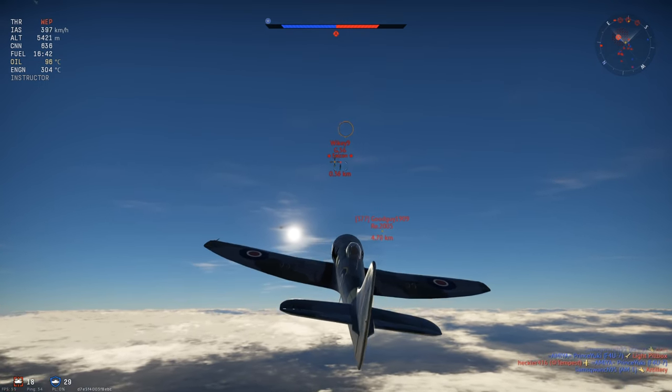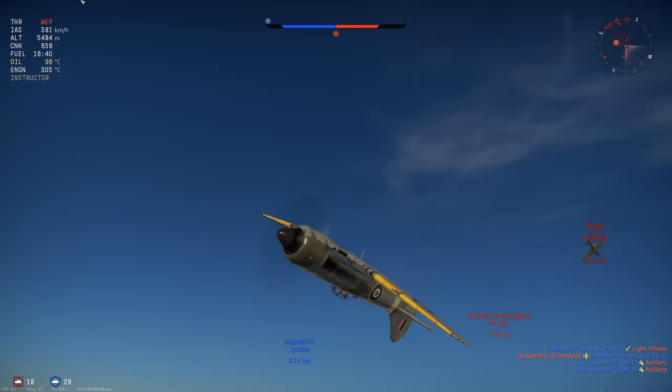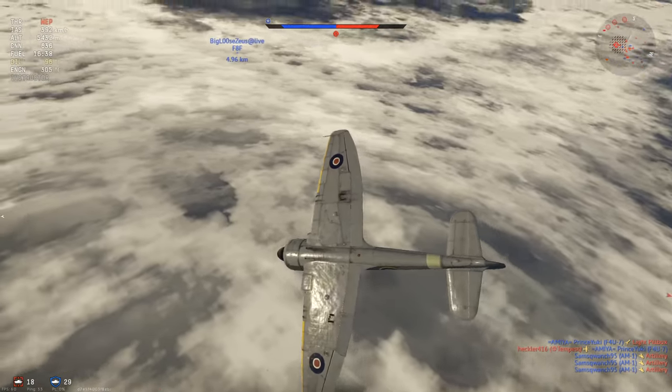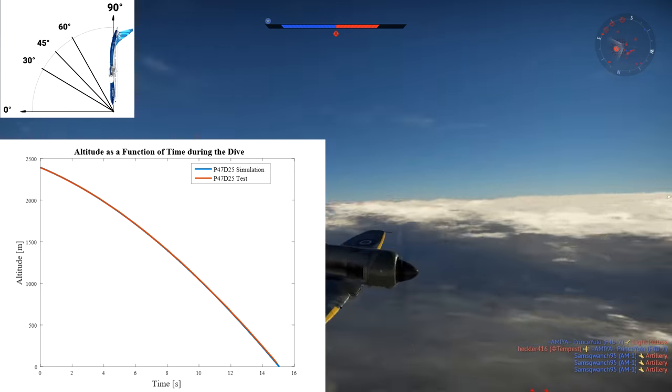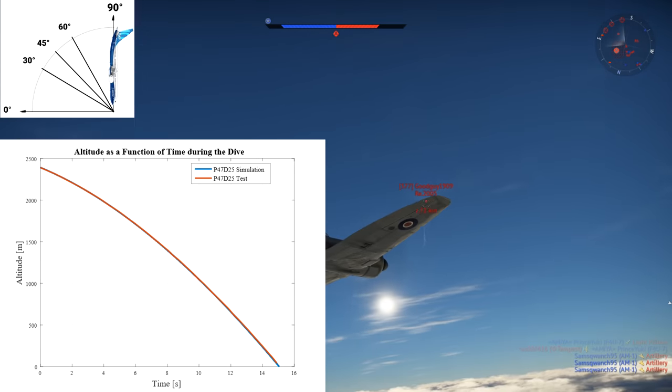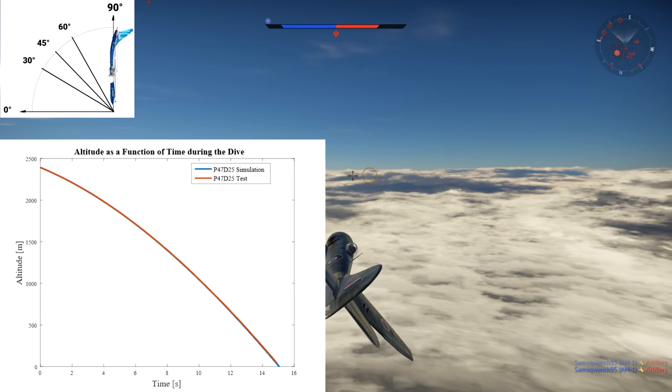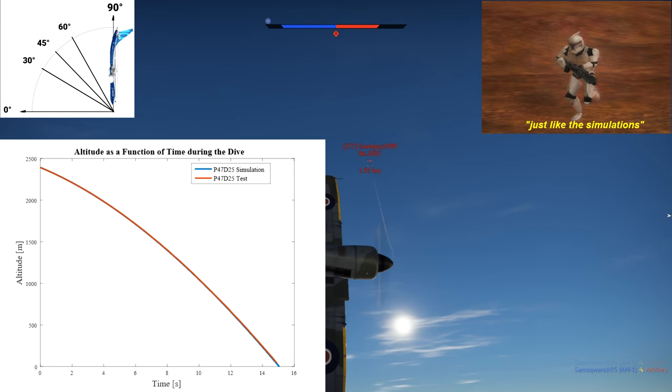Now let's compare the test data to the simulation to make sure the simulation and models are accurate. On the altitude as a function of time graph for the P-47, you can see that the simulation curve in blue and the test curve in red are essentially identical, which is great news for the simulation accuracy.